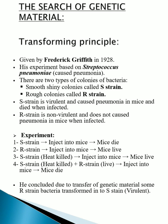In the fourth step, he injected heat-killed S strain plus R strain into the mice and observed that the mice became dead. This fourth experiment proves that something from the S strain transfers to the R strain, which makes the R strain virulent and causes the disease.